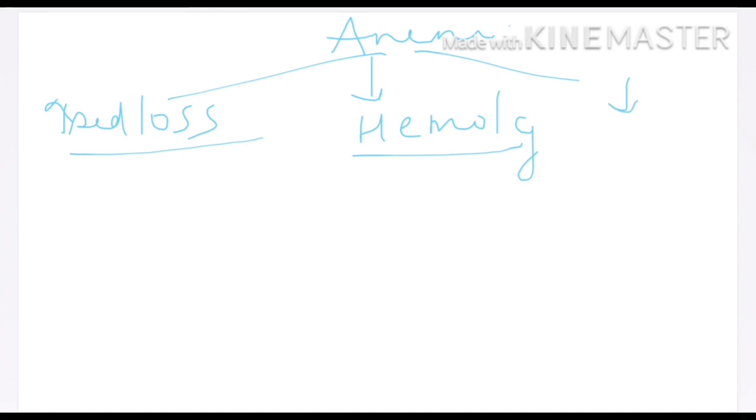Now, mainly anemia occurs due to three causes: either there is increased loss, or there is hemolysis, or third is decreased production.